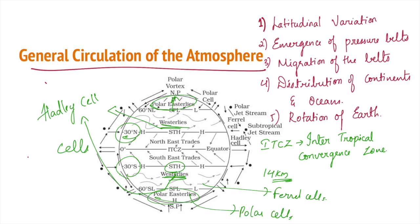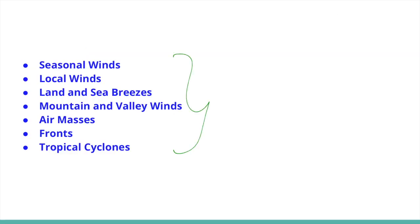These three cells set the pattern for the general circulation of the atmosphere. Transfer of heat energy from lower to higher latitudes maintains the general circulation. This circulation also affects the oceans — large-scale atmospheric winds initiate large, slow-moving ocean currents. The ocean, in turn, provides energy and water vapor input to the air, with this interaction taking place slowly over large ocean areas.